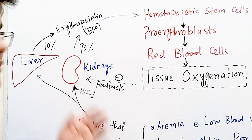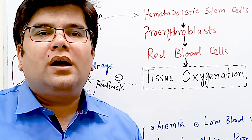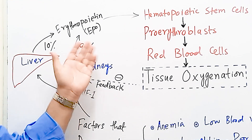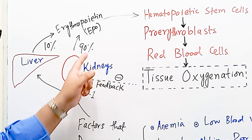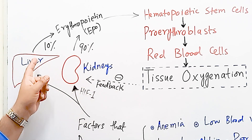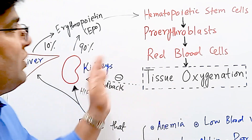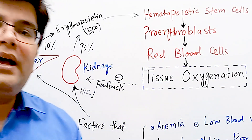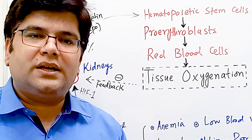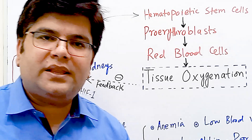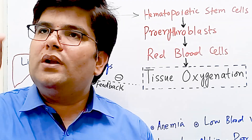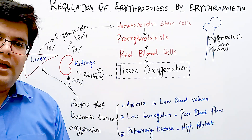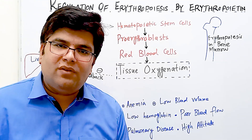If both kidneys are removed experimentally or destroyed in a human, there is no erythropoietin production. The remaining 10% from the liver is insufficient to adequately stimulate bone marrow for red blood cell production. These individuals develop anemia known as renal anemia. A person with chronic renal failure will appear pale due to insufficient erythropoietin, resulting in low red blood cell production and low hemoglobin levels.